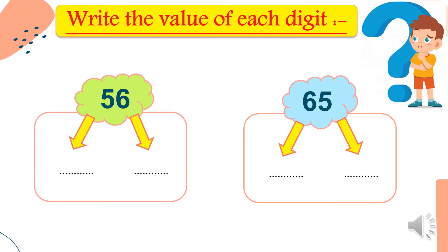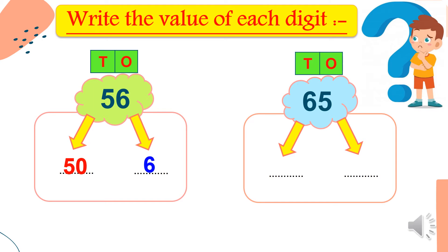Write the value of each digit. First number: fifty-six. I put places: ones and tens. The value of five in tens — in tens we put a zero — its value equals fifty. Six in ones — no zero — its value equals six. Next: sixty-five. Six in tens — put a zero — its value equals sixty. Five in ones — no zero — its value equals five.